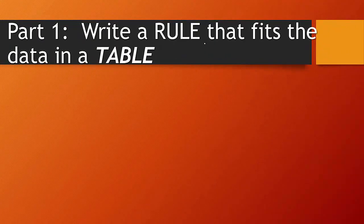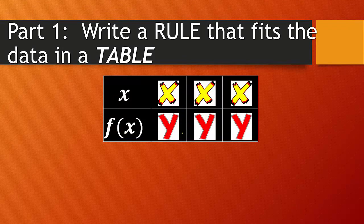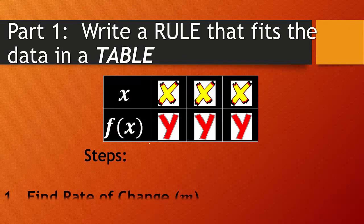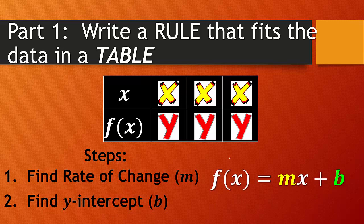So let's start with writing a rule that fits the data in a table. Okay, so x-values, y-values are your f(x). Okay, steps for that. Find the rate of change, which is your m, and find the y-intercept, which is your b. And it's going to be in this form, f(x) equals mx plus b.